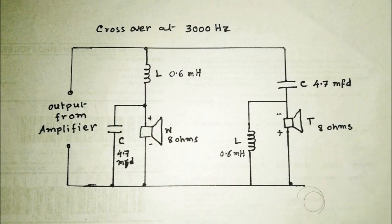So let us draw the diagram of a 2-way 12 dB crossover network with the values of components. This network is for crossover point at 3000 Hertz and speaker impedance of 8 ohms. For a second-order network, it is recommended to use the tweeter in reverse phase for better results, as shown in the diagram.